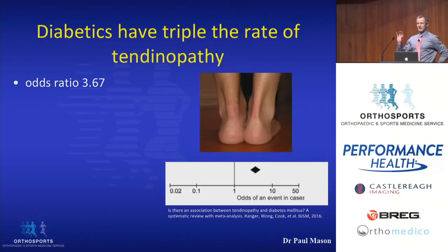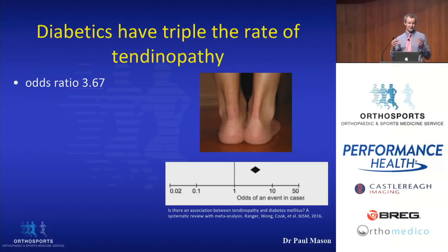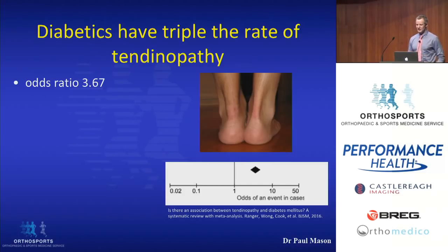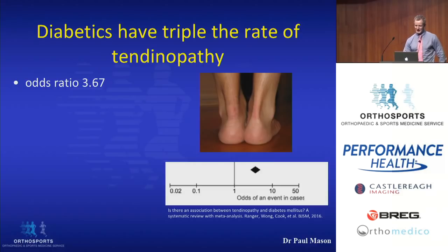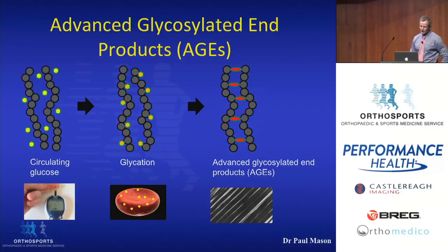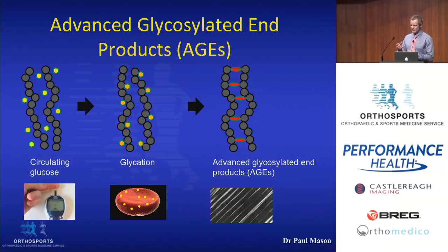Moving on, let's look at another mechanism that can impair connective tissue health, particularly relating to diabetics. We all know that people with diabetes have musculoskeletal complaints at significantly higher rates, ranging from something like Dupuytren's contracture through to a frozen shoulder — and that's exactly what we see in the literature. The data would suggest that somebody with diabetes has more than three times the rate of tendinopathies than control patients, and the major mechanism comes down to the elevation in blood sugar that happens in diabetes.